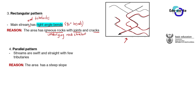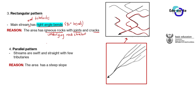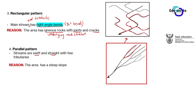The parallel pattern has swift and straight streams. You can see that the streams are very straight — they are not bending like those in the dendritic pattern which look like a tree. For the parallel pattern the streams are quite straight and swift. Another feature is that the parallel pattern has fewer tributaries.